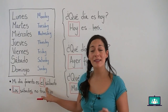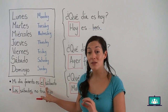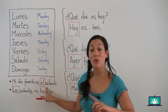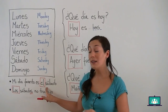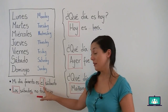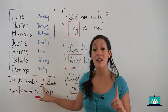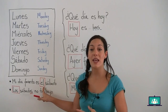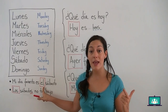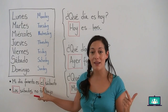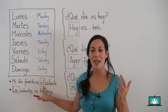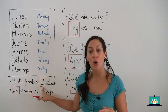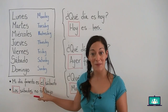In Spanish, the days of the week are masculine, so when we need to use an article, we need to use the masculine article. That's why we have el — el sábado. And we will say el lunes, el martes, el miércoles, el jueves, el viernes, o el domingo. ¿De acuerdo?